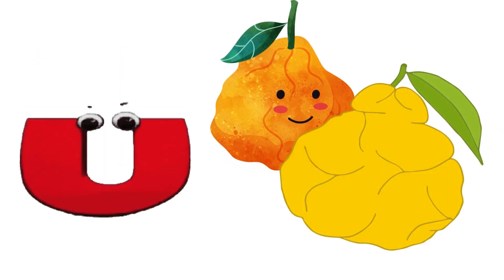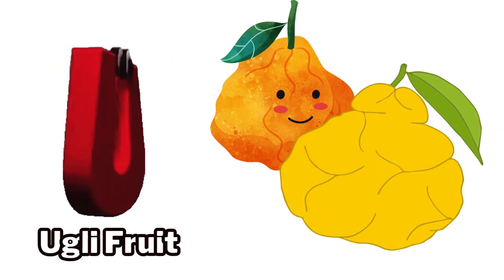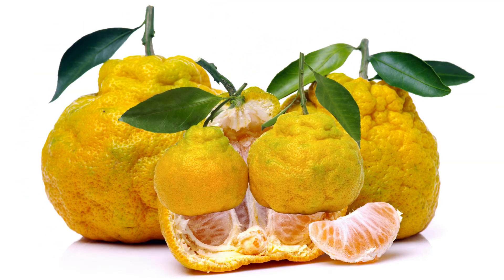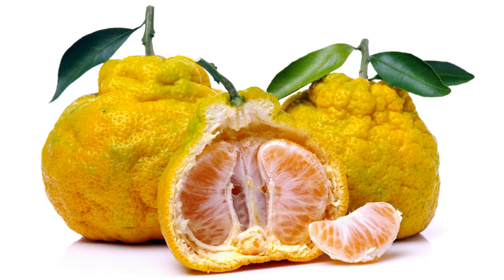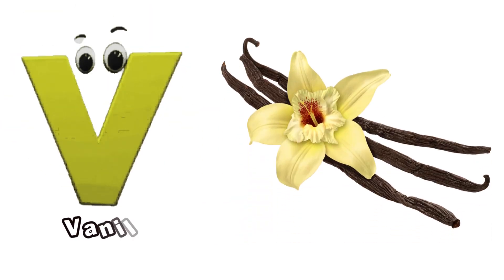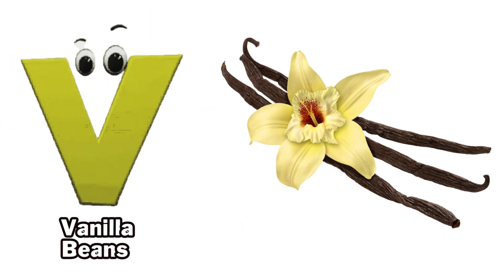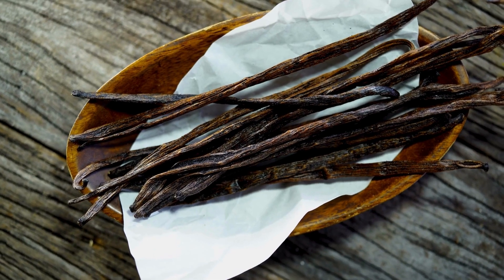U is for ugly fruit, u-u-ugly fruit. V is for vanilla bean, v-v-v-vanilla bean.